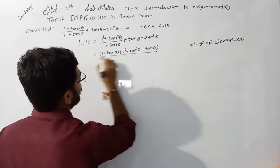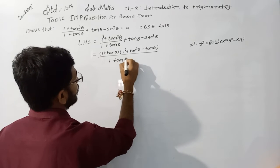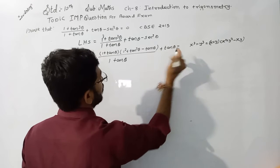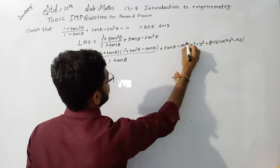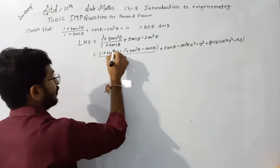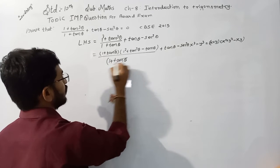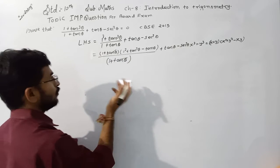This is upon (1 plus tan theta) plus tan theta minus sec square theta. Now, 1 plus tan theta and 1 plus tan theta, both are cancelled out since the numerator and denominator are the same.